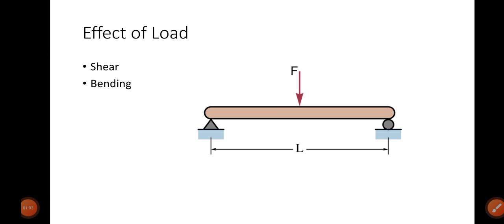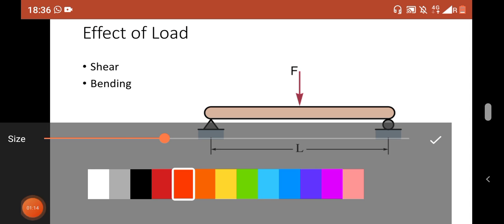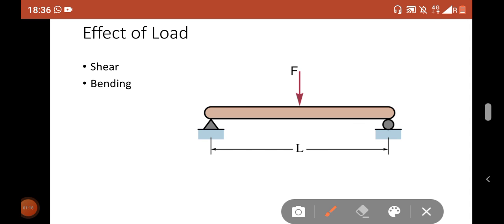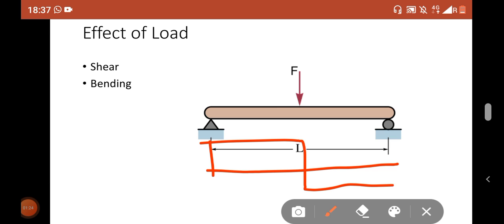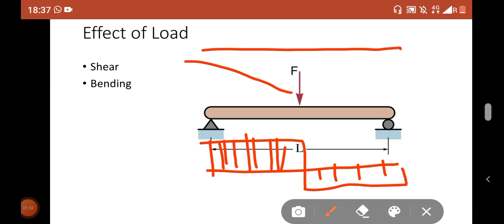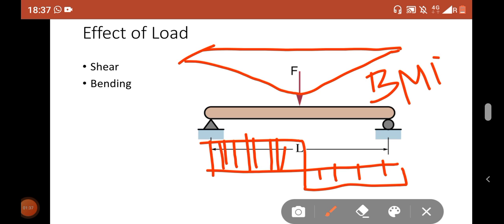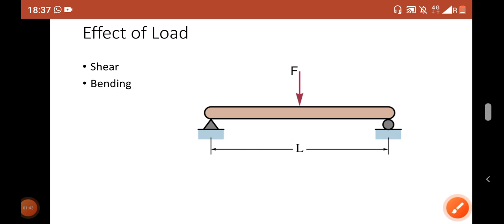The very first thing to understand is the effect of load. If you apply any load on a beam, there are two effects: first is shear, and second is bending. If you draw a shear force diagram it looks like this, and the bending moment diagram looks like this.